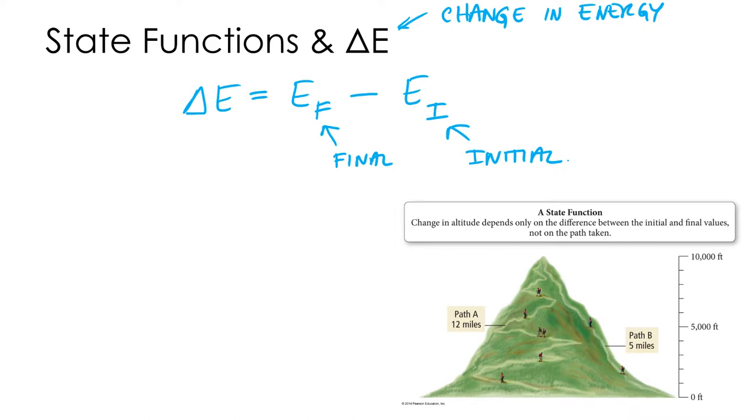Alright, so it turns out that's all we need to know. If we want to know about the change in energy of a chemical reaction, all we need to know is the internal energy of the system when the chemical reaction is over and when it started. And we can do that because it turns out change in energy and a lot of thermodynamic functions are state functions.